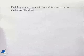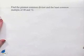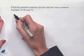Now let's look at a problem dealing with the greatest common divisor and least common multiple. Find the greatest common divisor and the least common multiple of 48 and 72. We'll begin with the prime factorization.